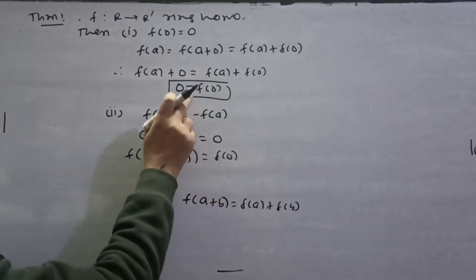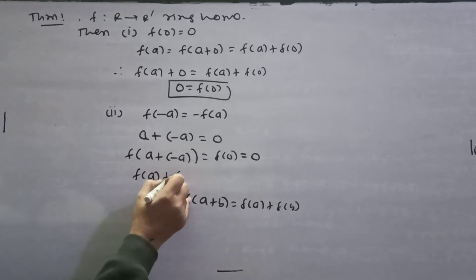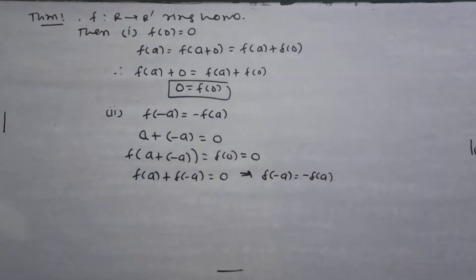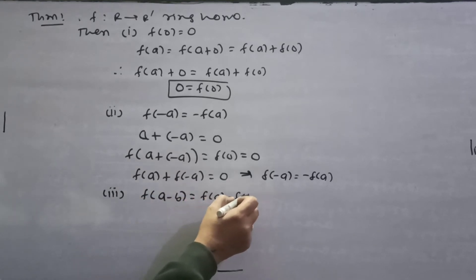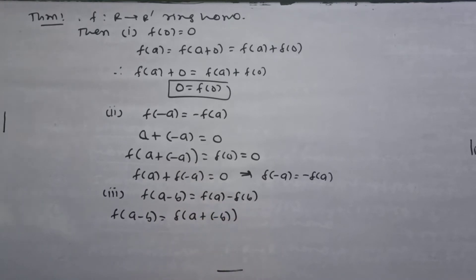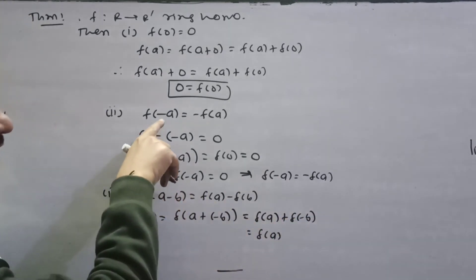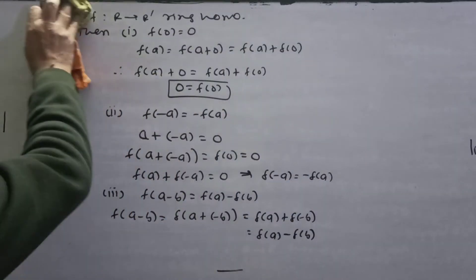Second property: f(-a) = -f(a). Because f is a ring homomorphism, f(a) + f(-a) = f(a + (-a)) = f(0) = 0, so f(-a) = -f(a). Third property: f(a-b) = f(a) - f(b). We write f(a-b) = f(a + (-b)). Because f is a ring homomorphism, this equals f(a) + f(-b) = f(a) + (-f(b)) = f(a) - f(b).